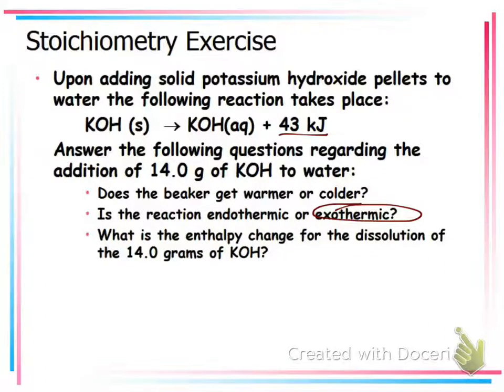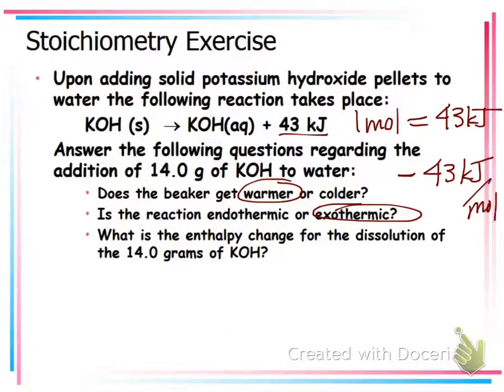If it's an exothermic reaction, and I dissolve this, and I touch the beaker, is the beaker going to feel warmer or cooler? Warmer. Warmer, because I'm releasing energy. So, it's going to feel warmer. Now, this reaction tells me that for every one mole of KOH that's dissolved, I'm going to release 43 kilojoules. It's exothermic, so I'm going to say negative 43 kilojoules per mole. For every one mole, 43 kilojoules is going to be released.